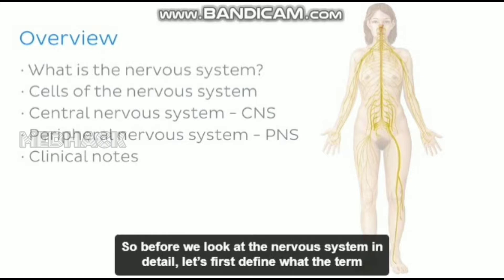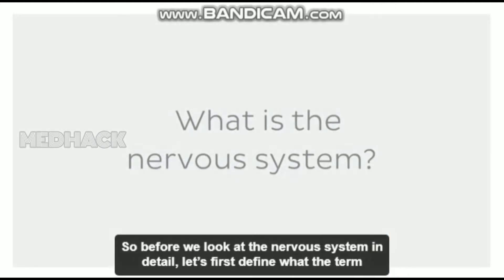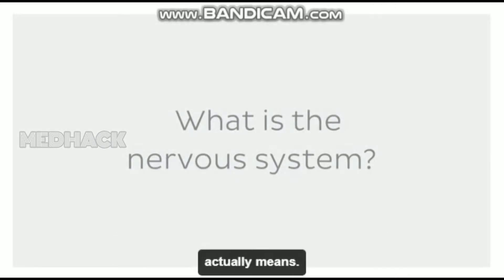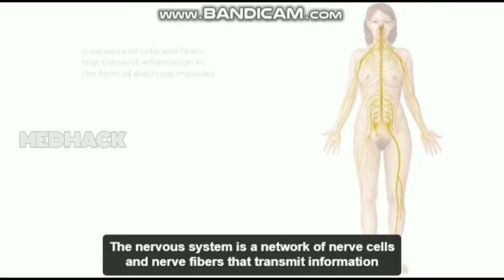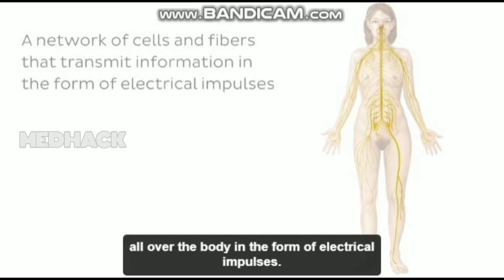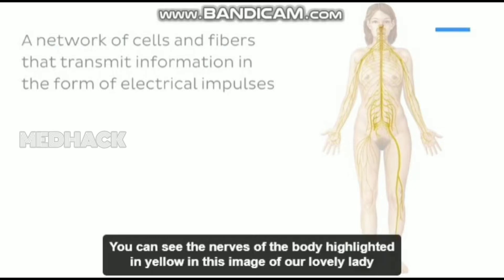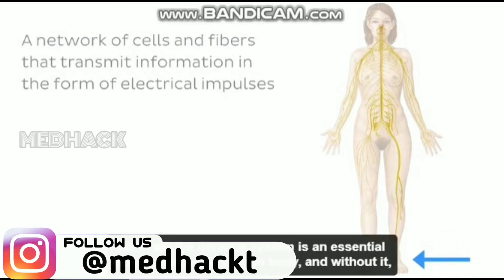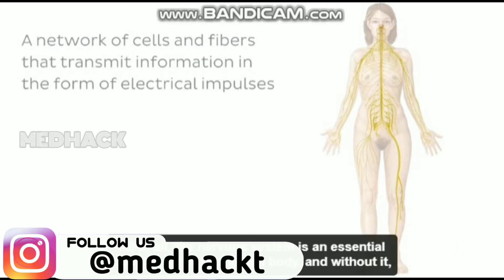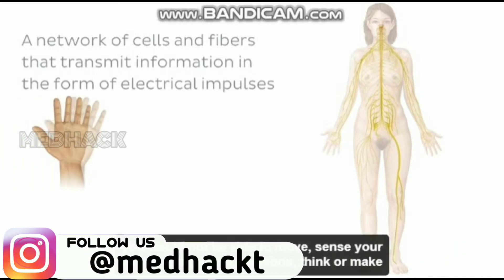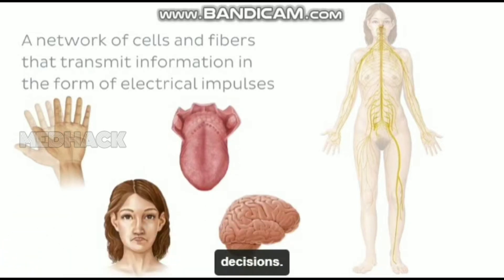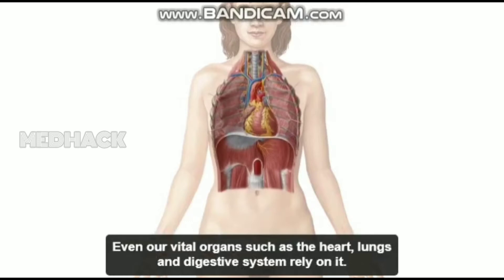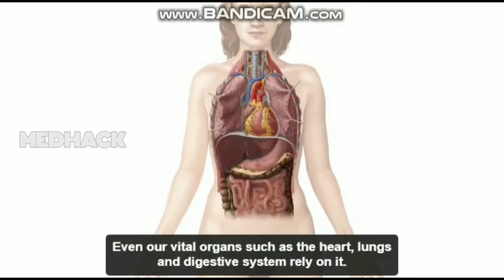So before we look at the nervous system in detail, let's first define what the term actually means. The nervous system is a network of nerve cells and nerve fibers that transmit information all over the body in the form of electrical impulses. You can see the nerves of the body highlighted in yellow in this image. All in all, the nervous system is an essential component of the human body, and without it, you would not be able to move, sense your surroundings, feel emotions, think, or make decisions. Even our vital organs such as the heart, lungs, and digestive system rely on it.